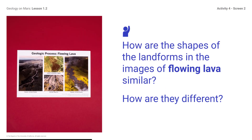How are the shapes of the landforms and the images of flowing lava similar? How are they different? You might mention that most of the landforms were straight, with only small curves, or that the landforms were wider than most of the ones formed by flowing water.